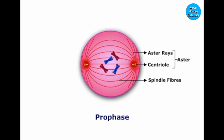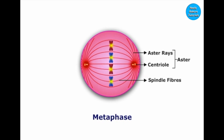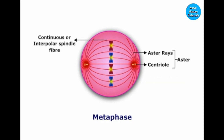The cell now enters metaphase. During metaphase, the chromosomes get thickest and get aligned at the equatorial plane. The spindle fibers which run from one pole to another are called interpolar or continuous spindle fibers.